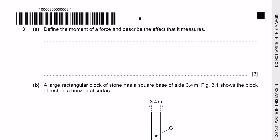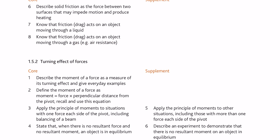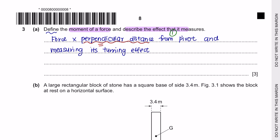Question 3, part A: define the moment of a force and describe the effect that it measures. According to the course specification for 2023–2025, under 1.5 Forces, the moment is force multiplied by the perpendicular distance from the pivot, and the moment of a force is a measure of its turning effect. You'll get one mark for the formula, one mark for mentioning perpendicular distance, and one mark for describing the turning effect.